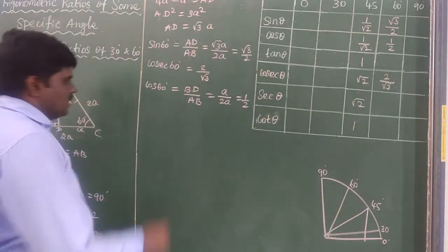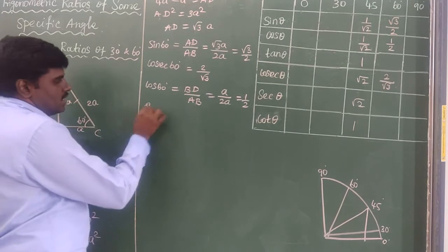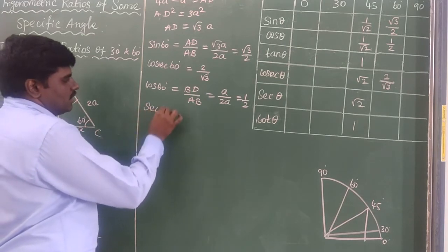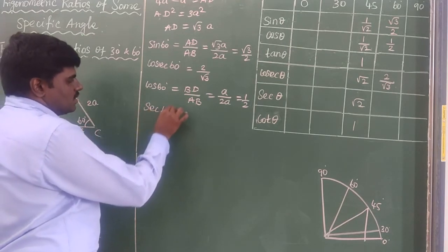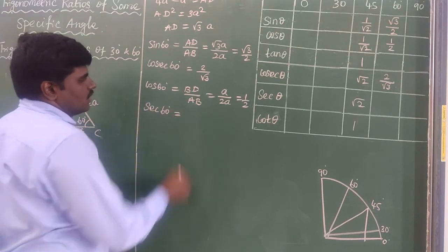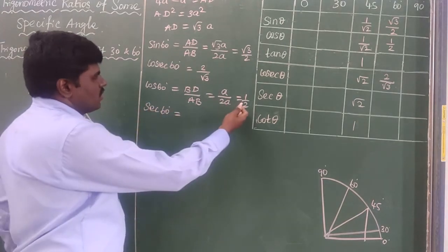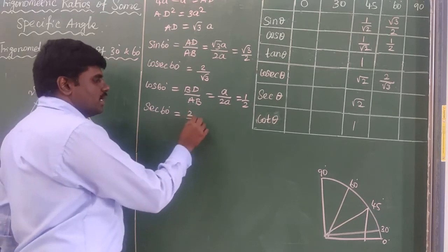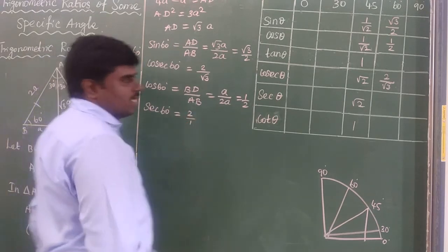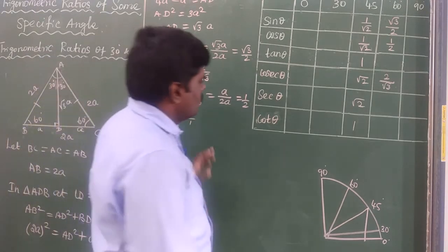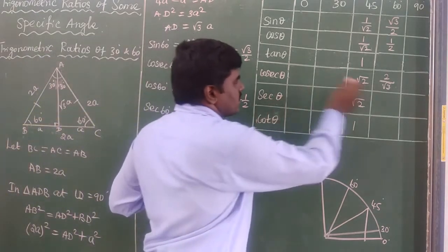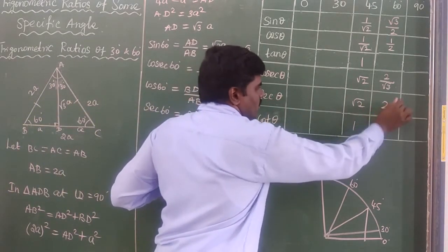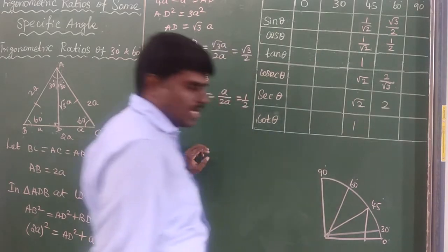Similarly, sec 60° is the reciprocal of cos 60°. Using the formula, sec 60° = 2/1 = 2.